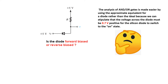This could be puzzling as we can see that 5V is here and 5V here — will it be forward biased or reverse biased? In that case, it is better that we assume. The analysis of AND and OR gates is made easier by using the approximate equivalent for the diode rather than the ideal, because we can stipulate that the voltage across the diode must be 0.7V positive. So if we assume we need 0.7V more, that means we need 5.7V for this diode to conduct.